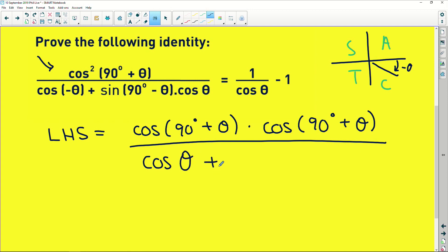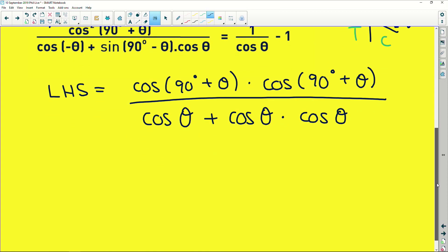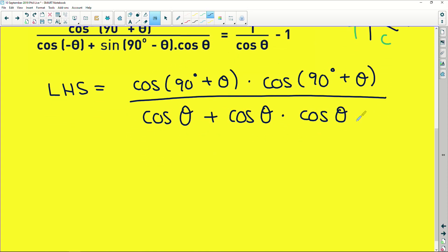So now we have a plus. Sine of 90° minus θ. Sine and cos of their 90° minus means that you immediately do the co-ratio. So it's cos(θ), and that is multiplied by another cos(θ). Now we keep on going. We're working only with the left-hand side, trying to make it look like the right-hand side.